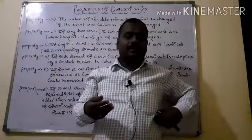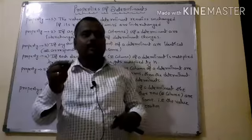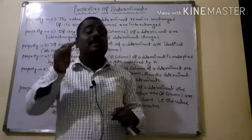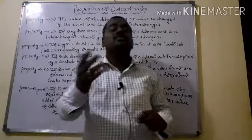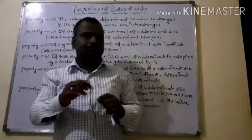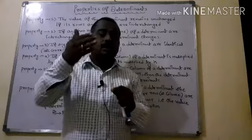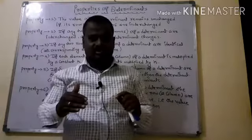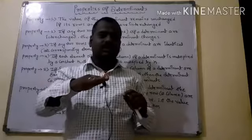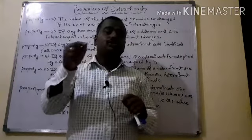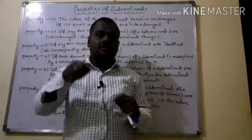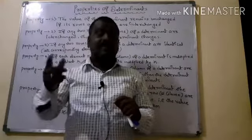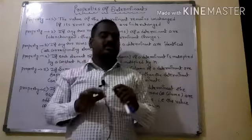The second property: if any two rows or columns are interchanged, then the sign of the determinant changes. Keep in mind, here a particular row changes with a row, or a column with a column. If any two rows or columns of the determinant are interchanged, the sign will change.